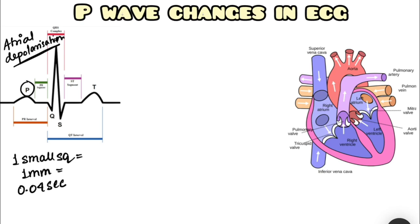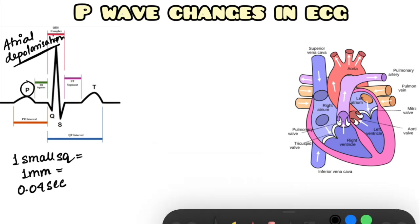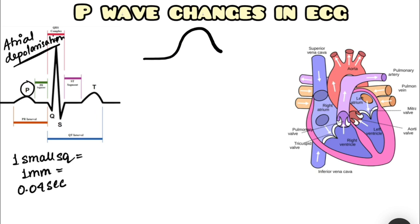Based on that understanding, let's examine the morphology of a normal P wave. The morphology of a normal P wave looks like this.